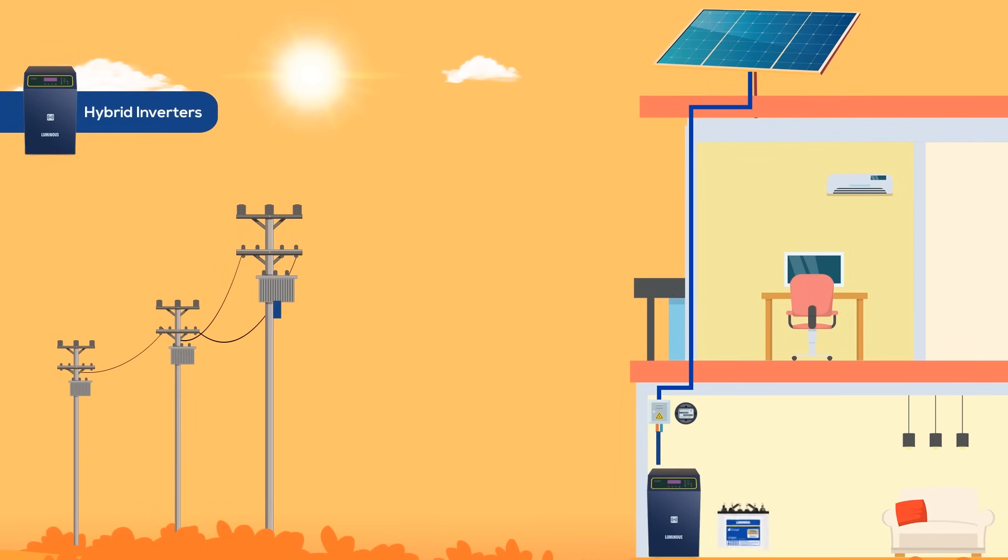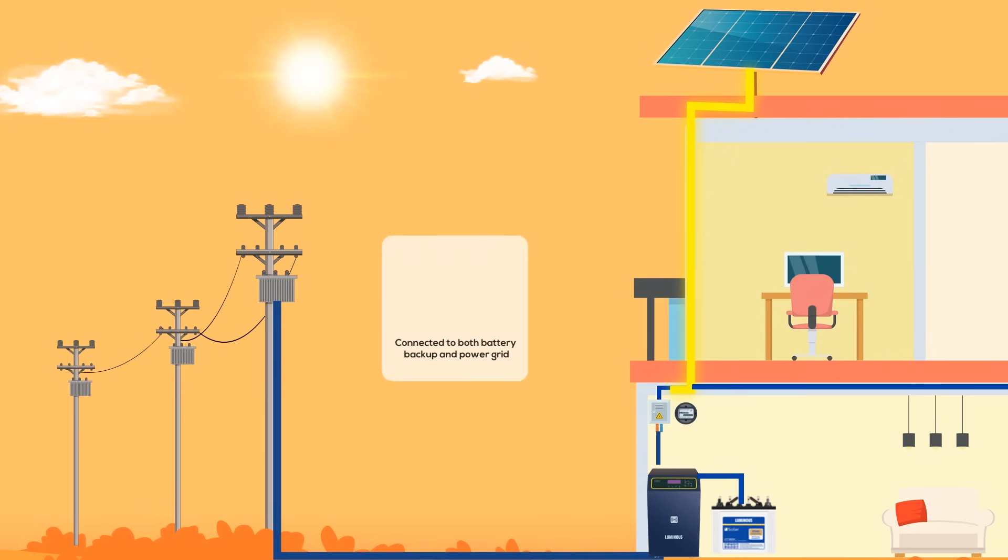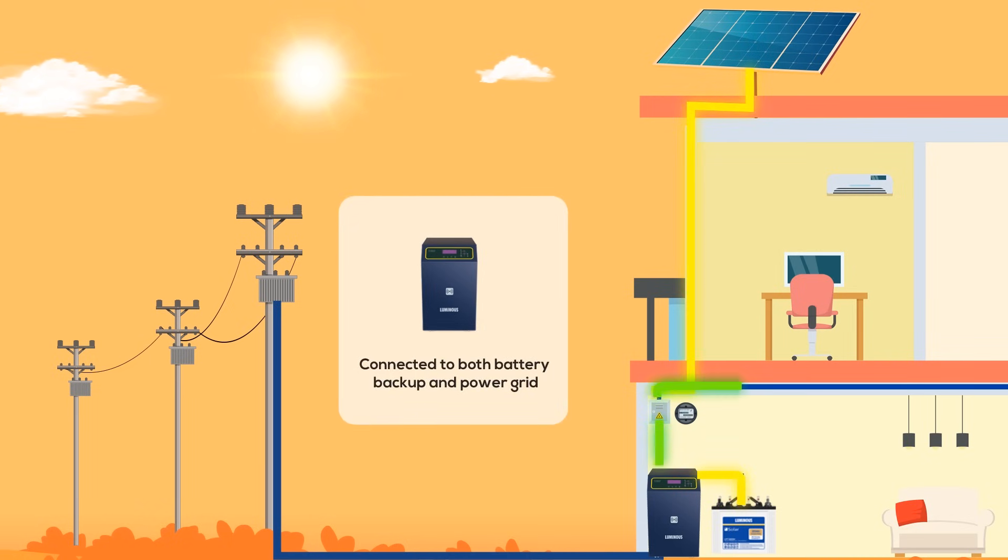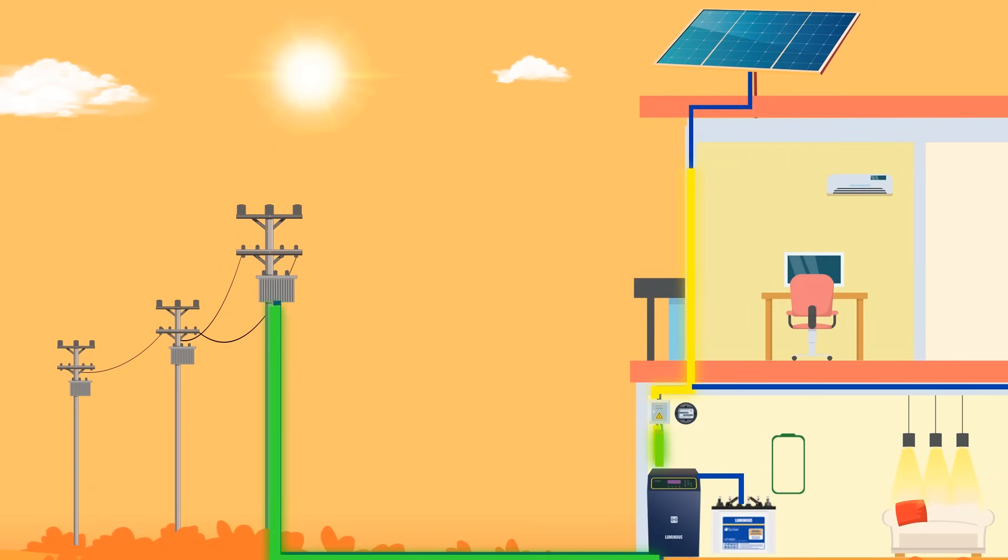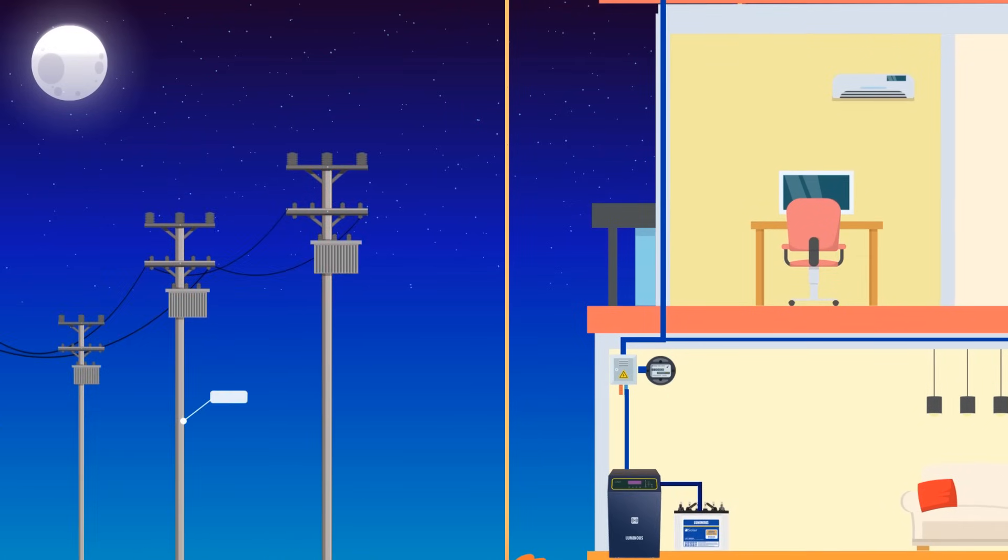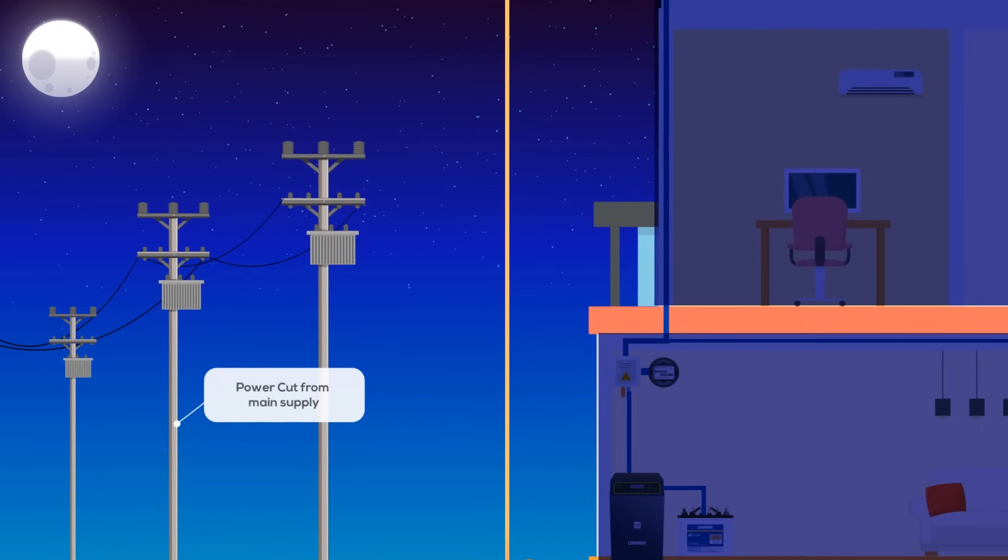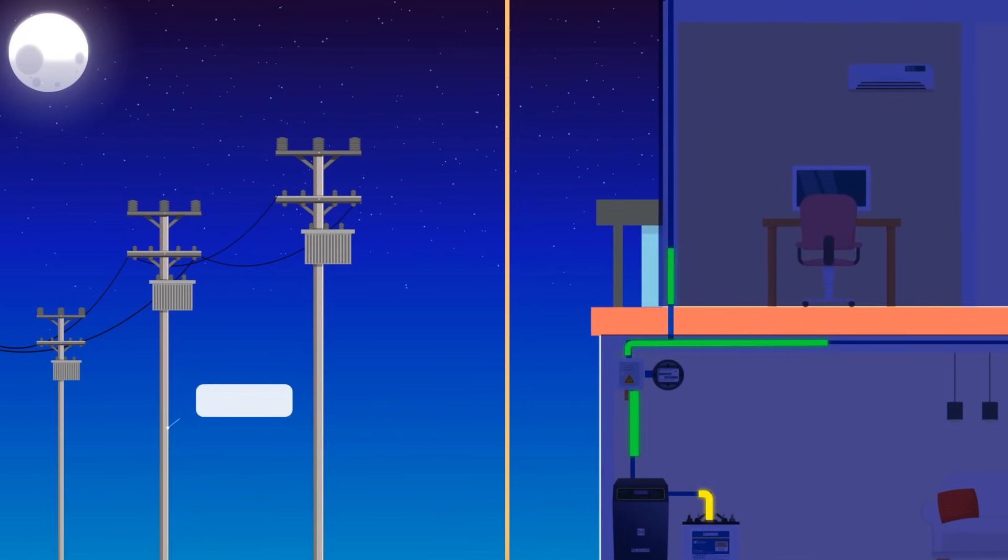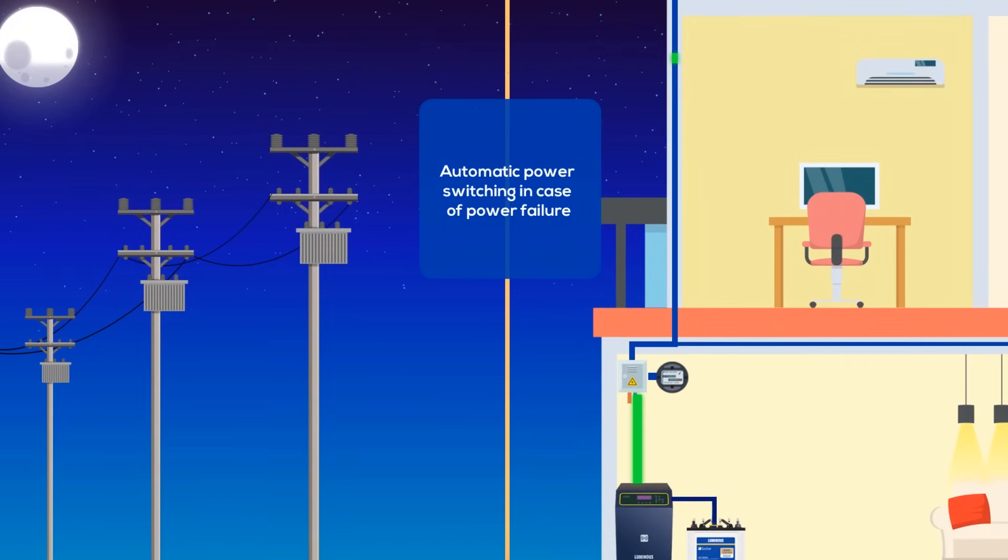Under normal operating conditions, it can supply power to the home, charge the batteries, and feed excess power into the grid. In case of a power cut, the unit will automatically switch over to battery supply and continue to operate independently from the electricity grid.